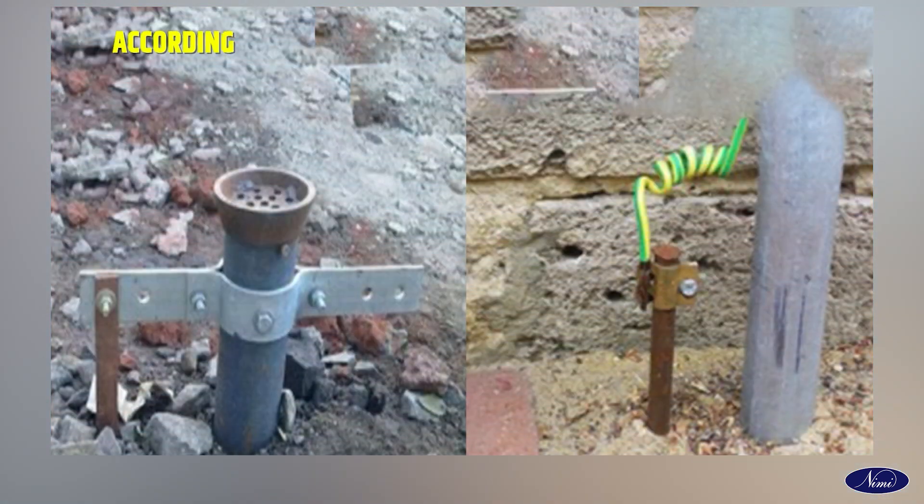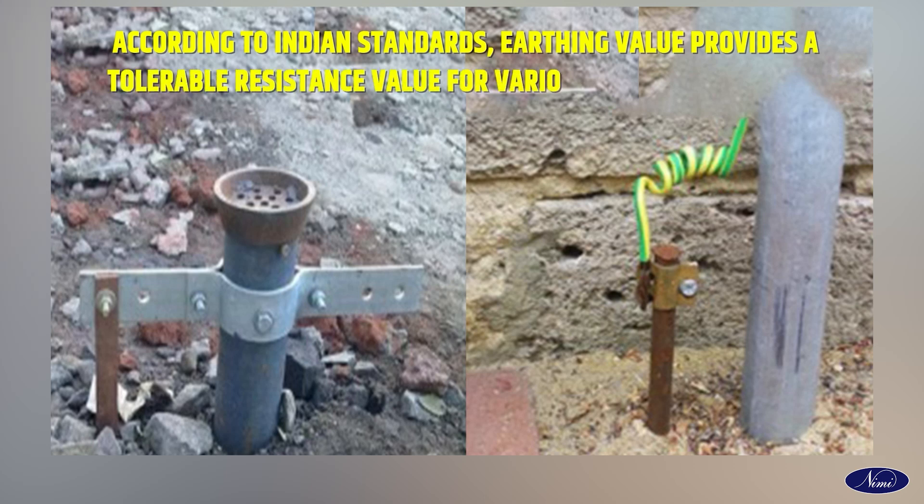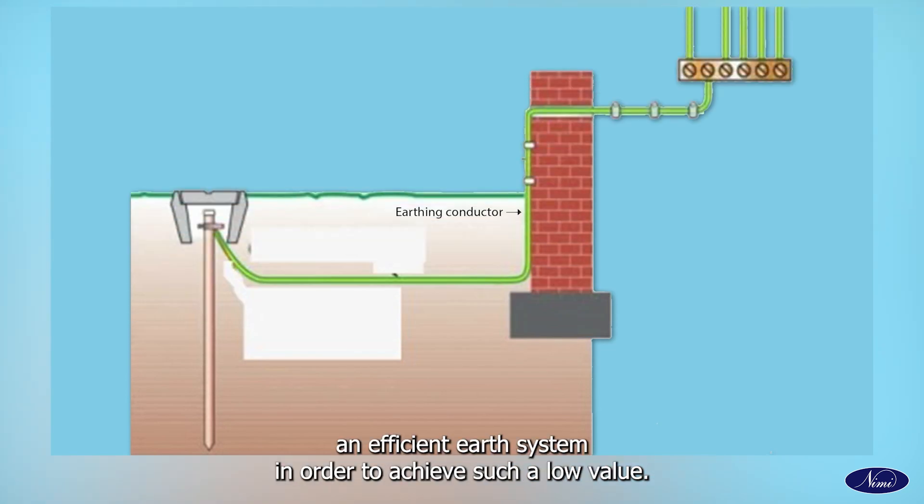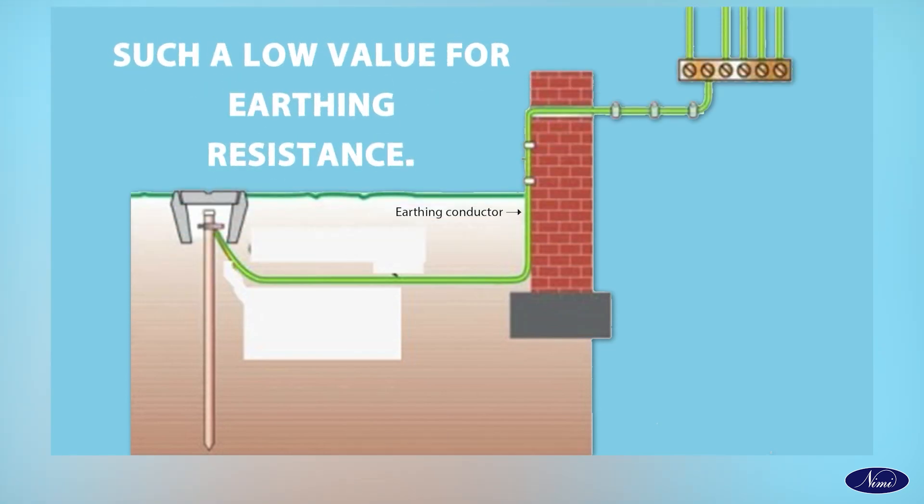According to Indian standards, Earthing value provides a tolerable resistance value for various constructions and is mostly dependent on soil resistivity. It will cost a lot of money and require an efficient earthing system in order to achieve such a low value for earthing resistance.